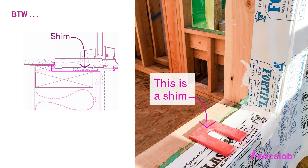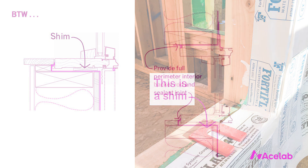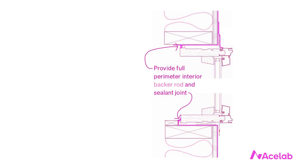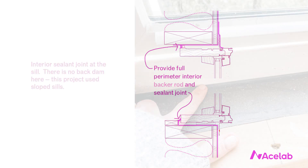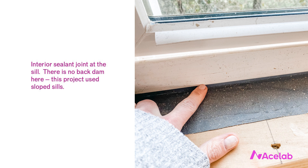With the window set, it's time to install the two-stage seal. On the inside, we install a full-perimeter backer rod and sealant joint. This seal must be completely continuous — in doing so, we also complete our air barrier at the window. We brought the air barrier into the rough opening with the fluid membrane, and now we seal it to the interior portion of the window frame for an airtight enclosure. Expanding foam or tape can also be used, though I prefer sealant since it's easier to inspect for continuity.